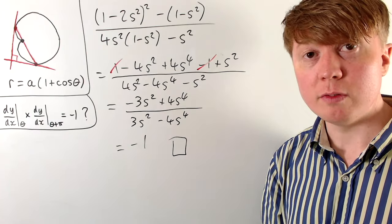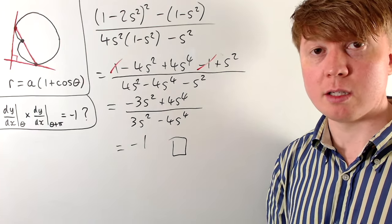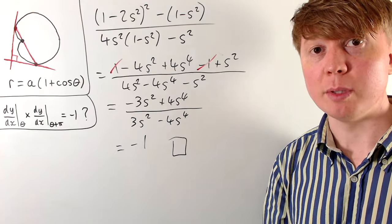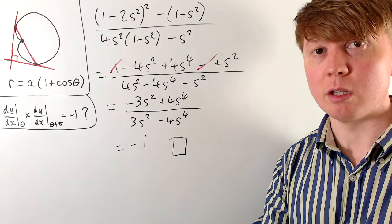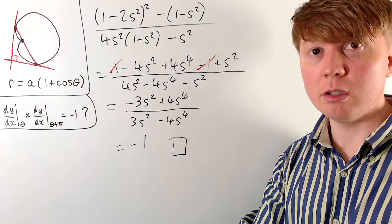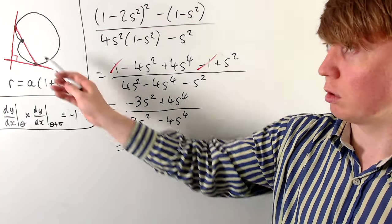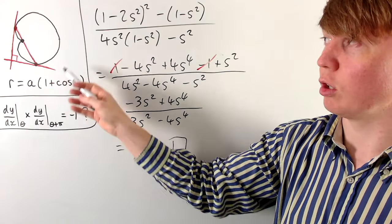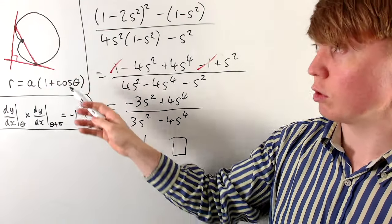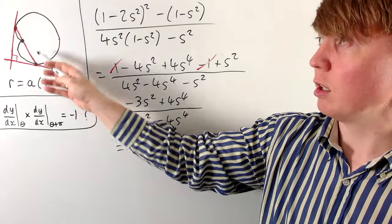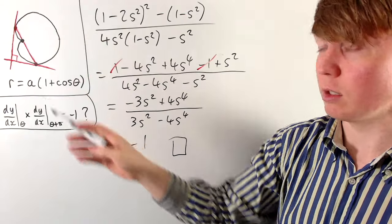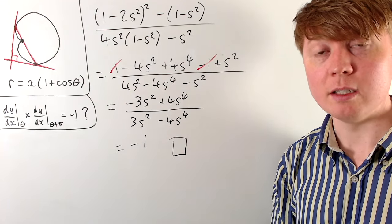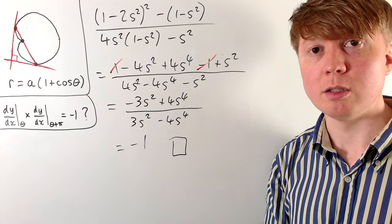So the product of the two gradients is −1, which tells us they are perpendicular. We can conclude that whenever you draw a chord through the cusp at the origin of a cardioid and draw the tangent at either end, those two tangents are always perpendicular to each other.